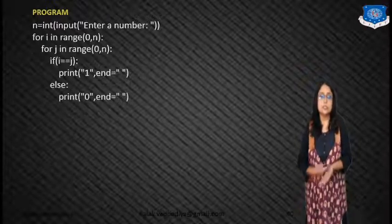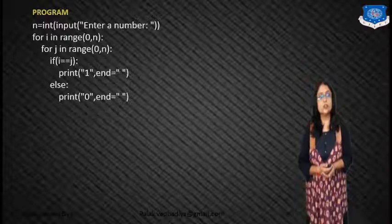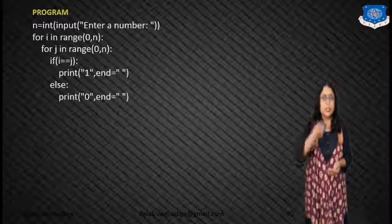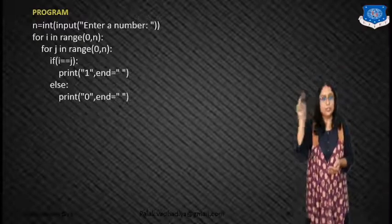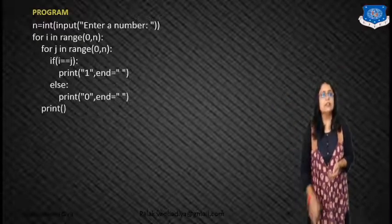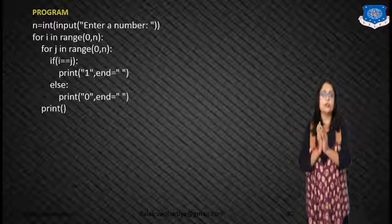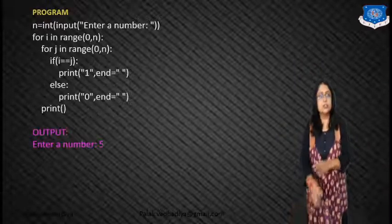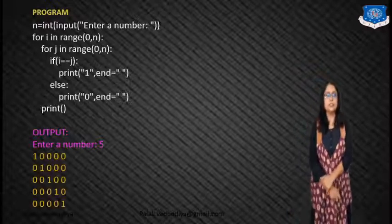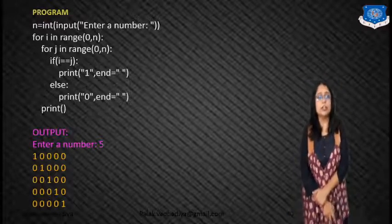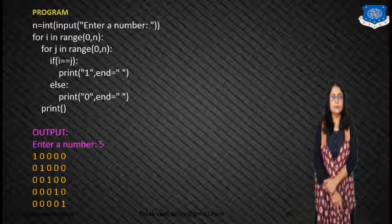In else, you want to print 0 with the space. So what will happen? First row, you will get all the columns. Then again for loop, second row, then for columns, like that. Then finally you have to use the print function to print all together. Now if you enter 5, then this is the output. Here you will get the identity matrix of 5 cross 5.